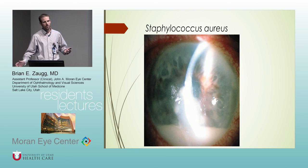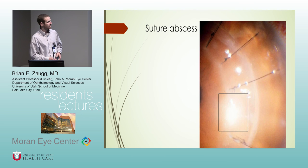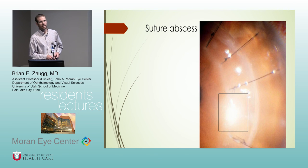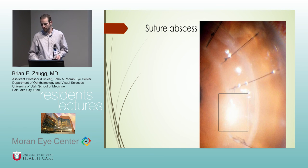This is what a staph aureus ulcer might look like - you can see a very large hypopyon, a very angry eye, and just kind of this soupy central whitening. This is a suture abscess - you've got an infection next to a suture. In these cases we culture it, put them on fortified antibiotics, and remove the sutures if possible. I say if possible because if this shows up right after surgery you kind of need the sutures. But if you're two or three months out you can get those sutures out, and the infection will clear a lot quicker with the foreign body gone.